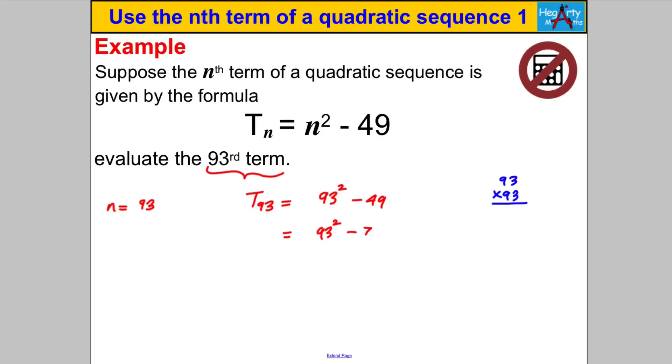Now does that look like anything familiar to you from the quadratic section? Well it looks like the difference of two squares to me which I know factorizes to 93 subtract 7 multiplied by 93 add 7. Remember the difference of two squares a squared subtract b squared is a subtract b multiplied by a add b. Why does this help?